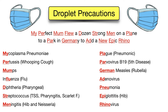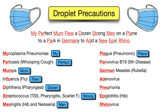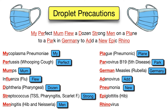Let's walk through it. 'My' remembers mycoplasma; 'PER' in perfect remembers pertussis; 'mom' remembers mumps; 'flu' remembers influenza; 'D' and dozen remembers diphtheria; 'STR' in strong remembers streptococcus; 'men' remembers meningitis, especially meningococcal meningitis caused by Neisseria; 'plane' remembers plague; 'PARC' remembers parvovirus B19; 'Germany' remembers German measles; 'ADD' remembers adenovirus; 'NU' remembers pneumonia; 'EPIC' remembers epiglottitis; and 'RHINO' remembers rhinovirus. If you repeat the mnemonic enough times, it will stick.